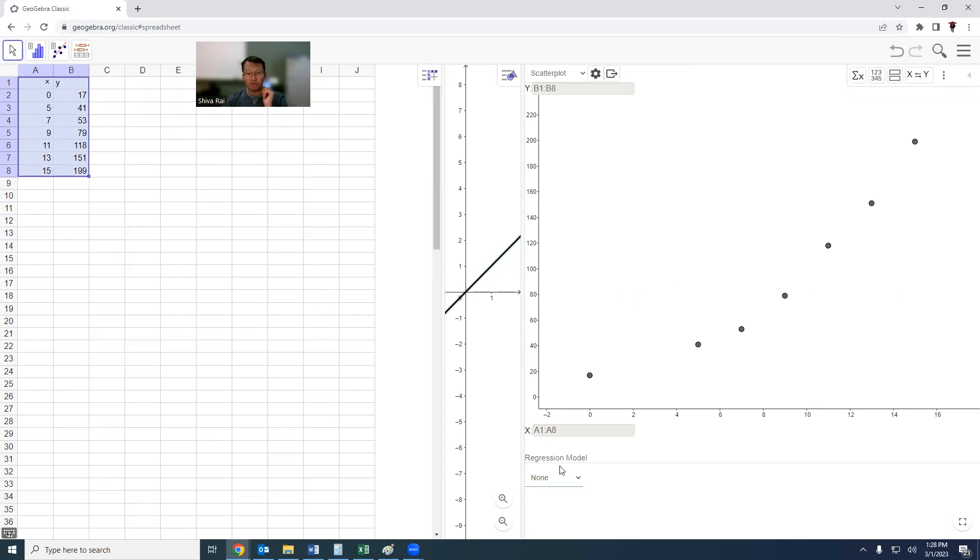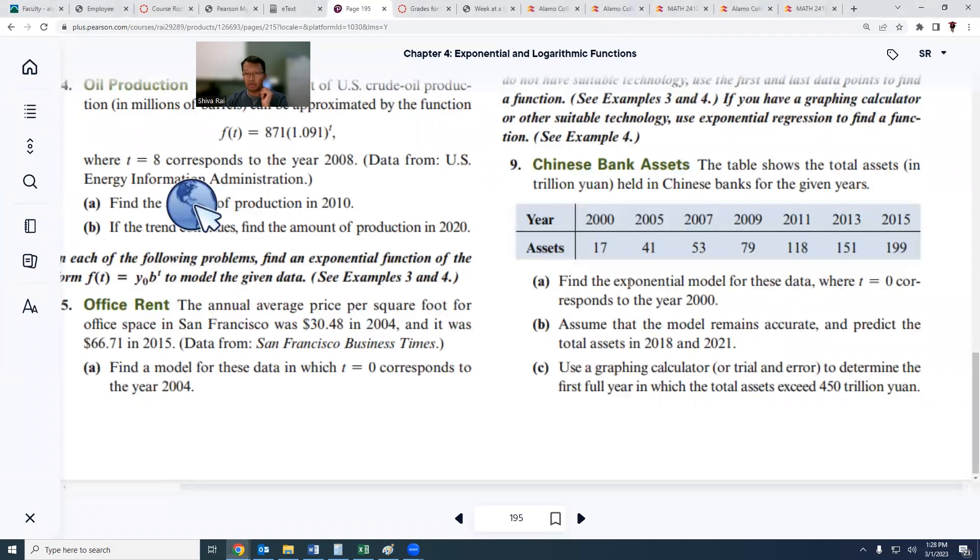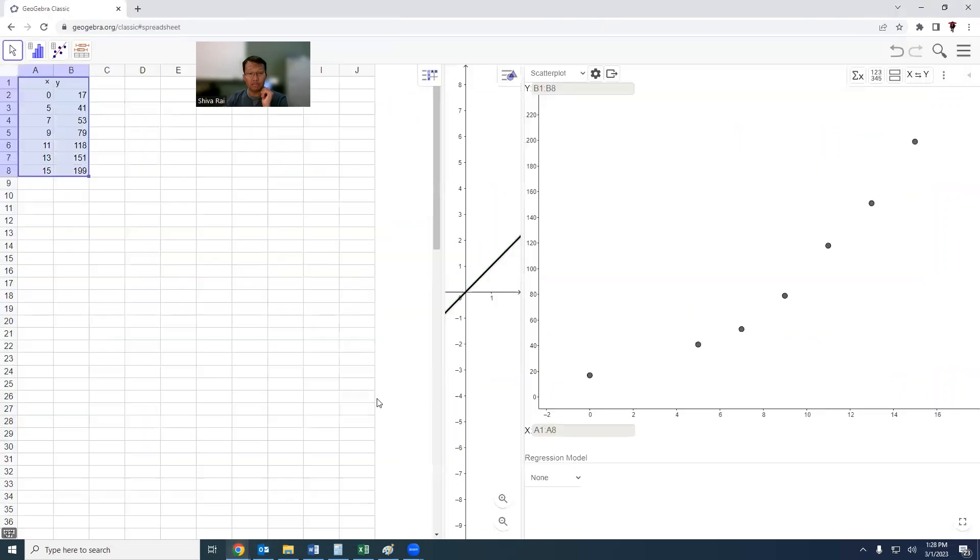Now it is asking about finding the exponential model. Click on this menu where you have lots of modeling functions like linear, log, polynomial, power functions, exponential growth, trigonometric, and logistic. Let's go for exponential. You can see this is a nice approximation and the equation is y equals 17.3628 times e to the power 0.1665x. That is the model.